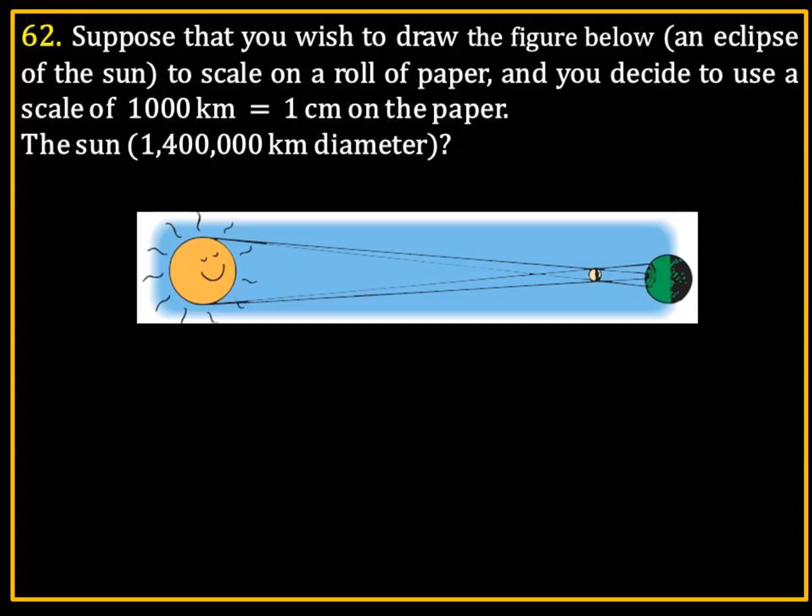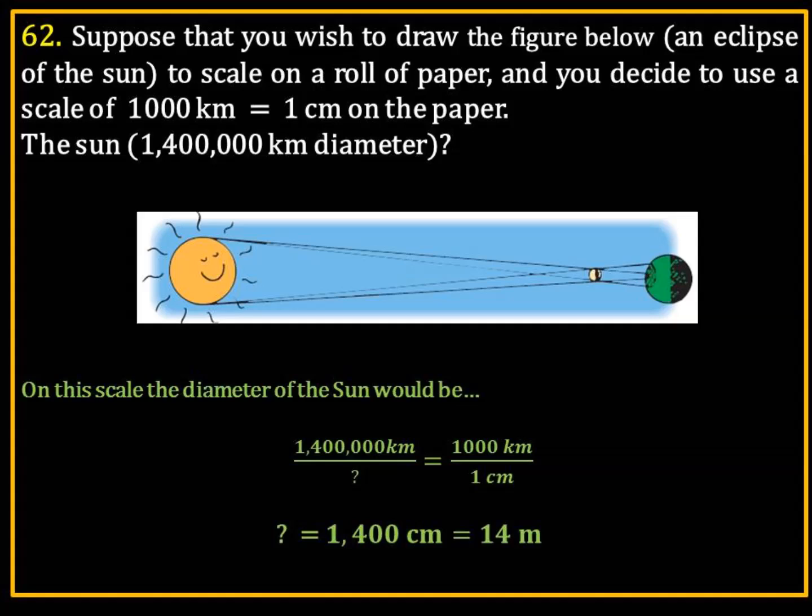Okay, now the next one, the diameter of the Sun: 1,400,000 kilometers in diameter, using the same scale. Think of what we've been doing for each of the previous slides. We've been simply moving the decimal point over to the left three decimal places. So, this is going to be 1,400 centimeters, or 14 meters. Pretty straightforward stuff.